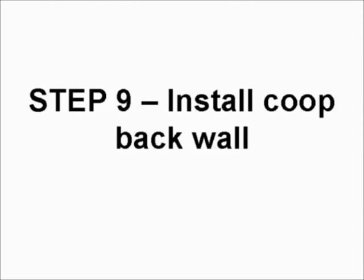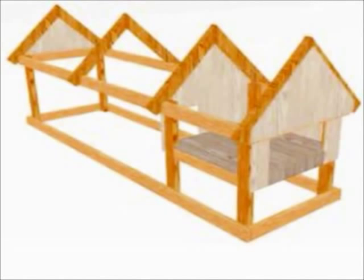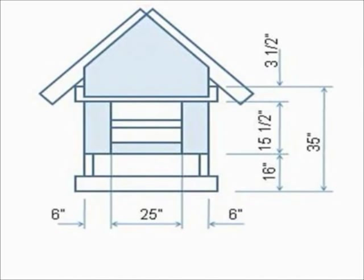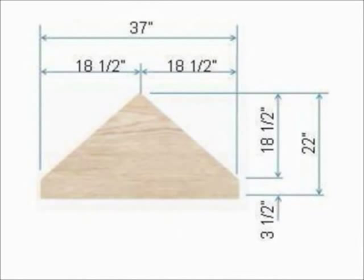Step nine, install the coop back wall. The back wall comprises of five separate pieces, all cut from half inch plywood. The first two pieces are exactly the same size, six inches by 15 and a half inches, mounted vertically either side of the opening. The third piece is three inches by 25 inches, mounted horizontally at the bottom between the two vertical pieces. The remaining two pieces are the gable wall end boards. They are triangular in shape and can be cut from a piece of board measuring 22 inches by 37 inches. However, the shape and dimensions can be seen more clearly in this diagram.